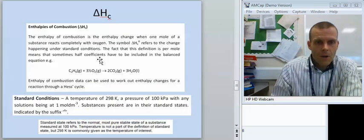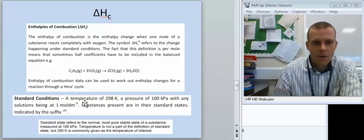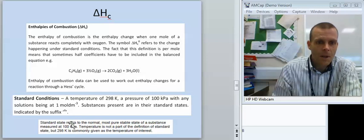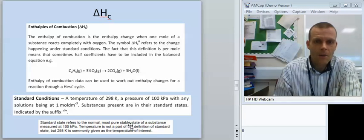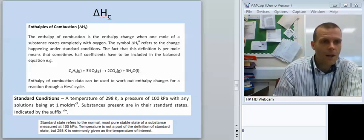Some definitions for you. You can pause me and have a read of that. We also need to know what standard conditions refers to. And again, have a look at that. Be careful. Standard conditions, standard states. So when we talk about a substance being in its standard state, it's kind of how you'd expect to find it in the lab. Stable state of a substance at atmospheric pressure. We don't get a temperature stated with it, but very often it is 298 Kelvin.